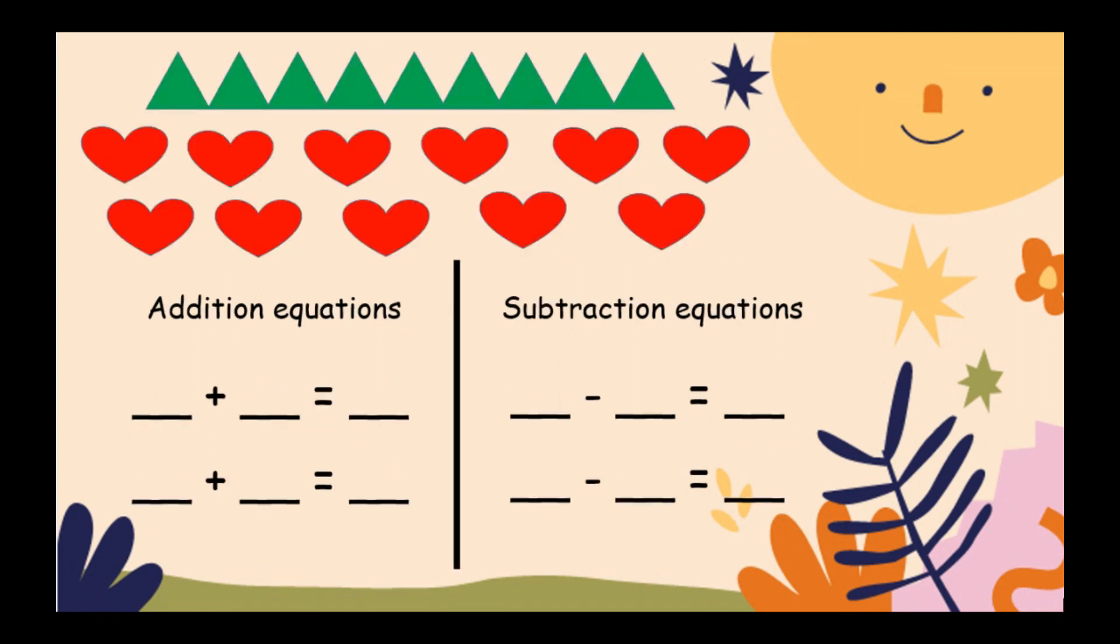Another example. Nine plus eleven equals twenty, or eleven plus nine equals twenty. For subtraction: twenty minus nine equals eleven, or twenty minus eleven equals nine.